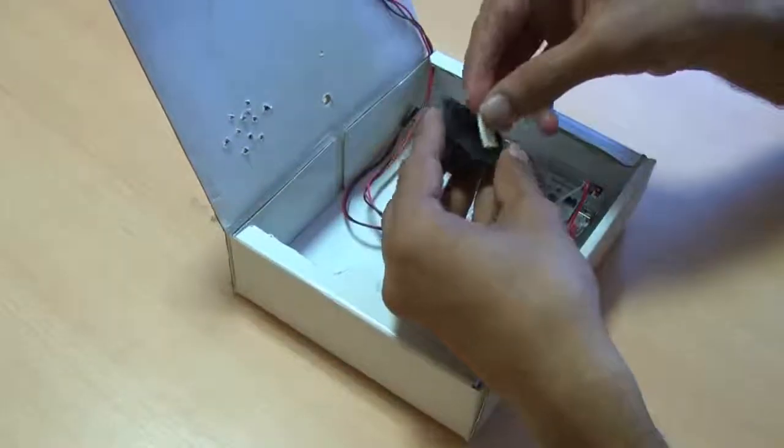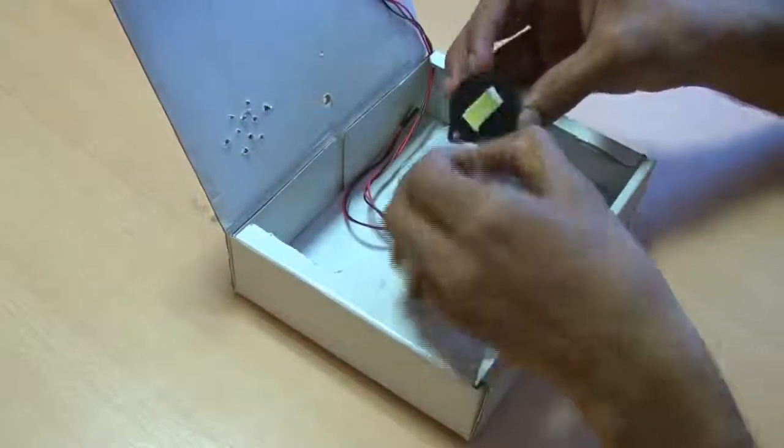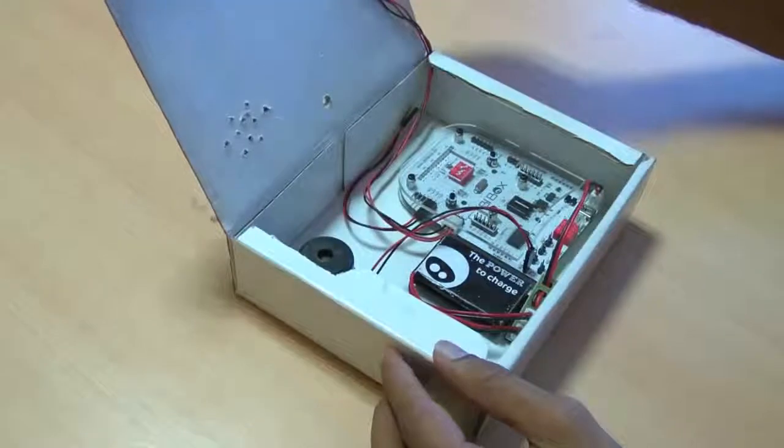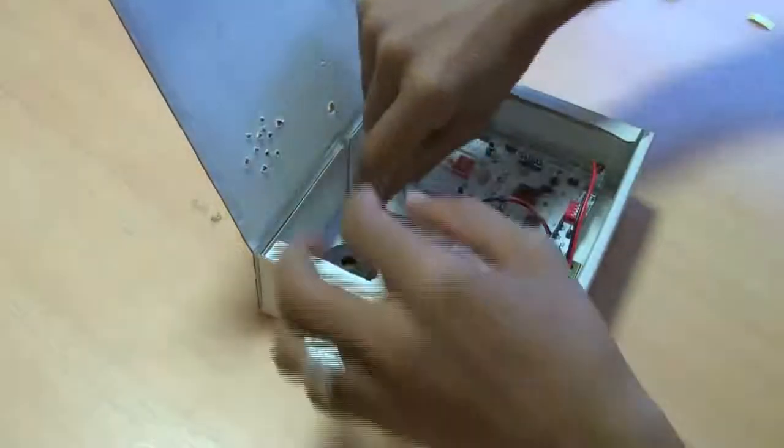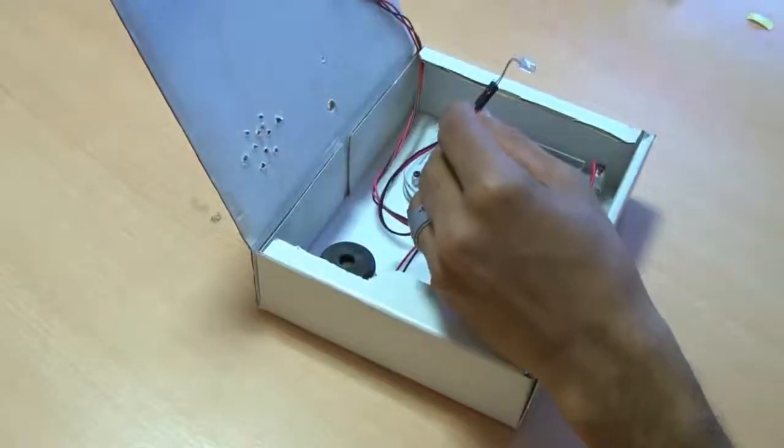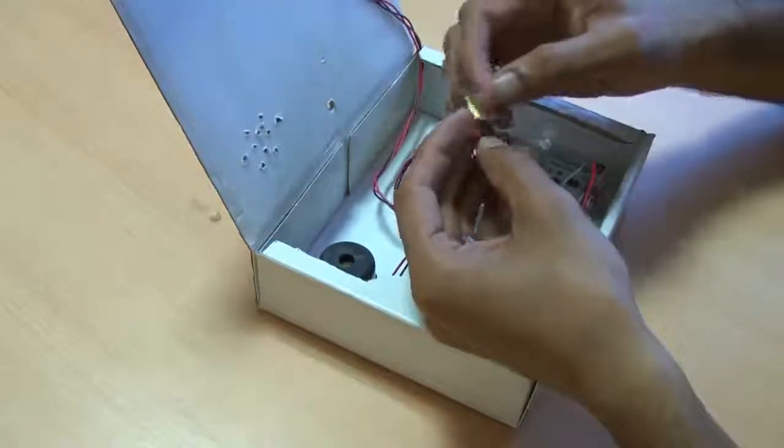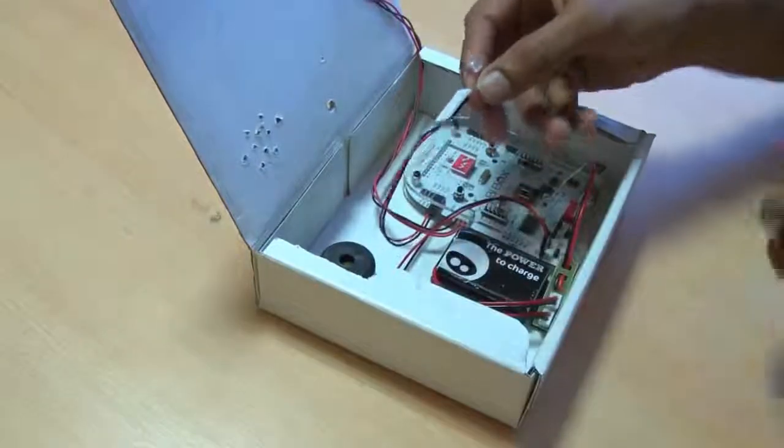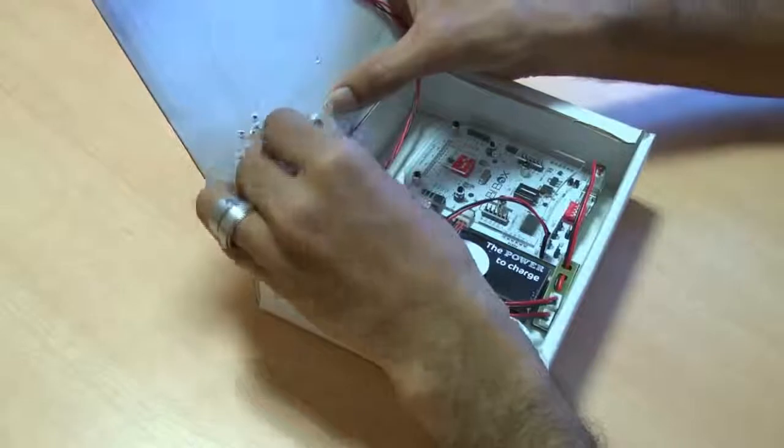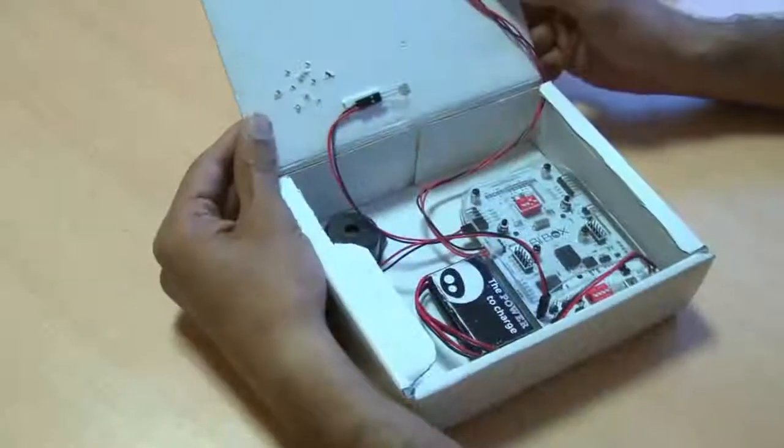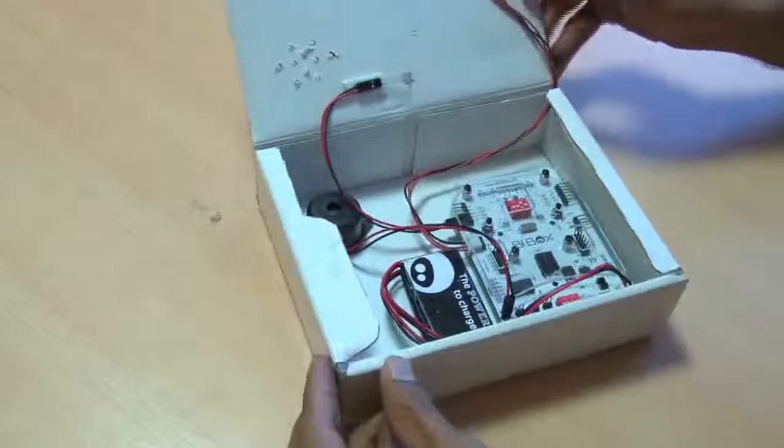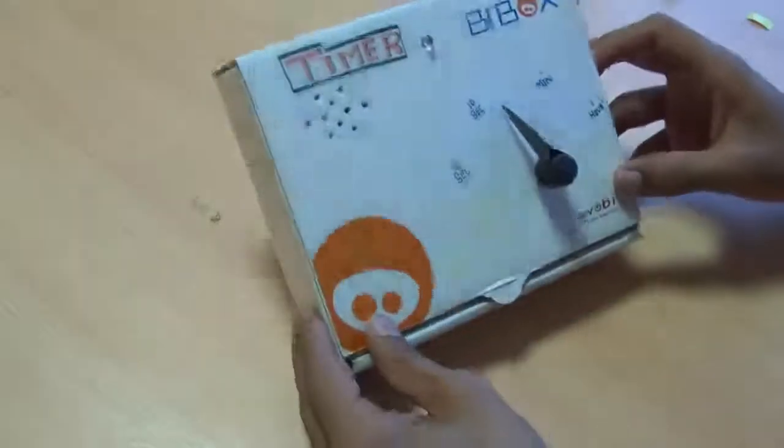And I'll place it at this corner because I have holes in here. Then for the LED, I'll put the LED out and I'll glue it here, just perfectly placed. Then I'll close the box and you're good to go.